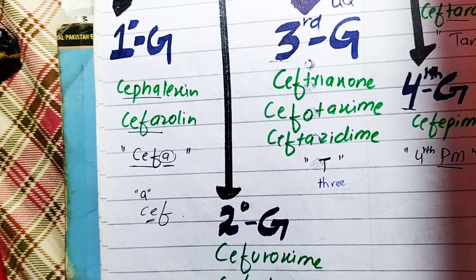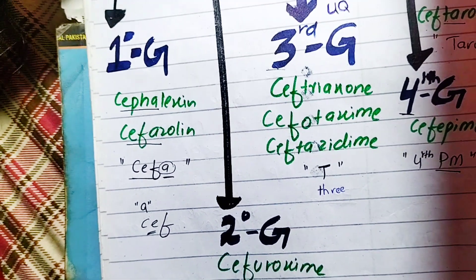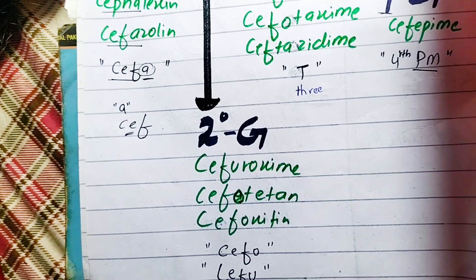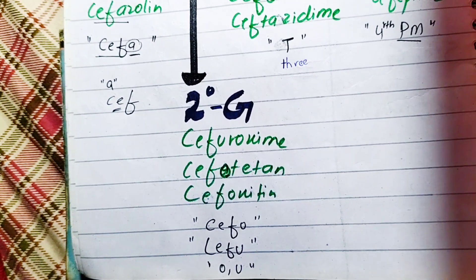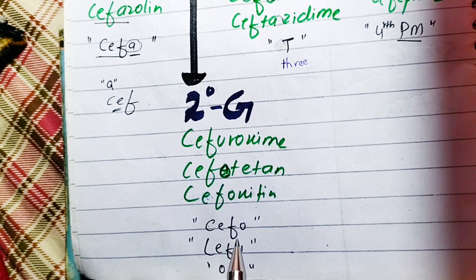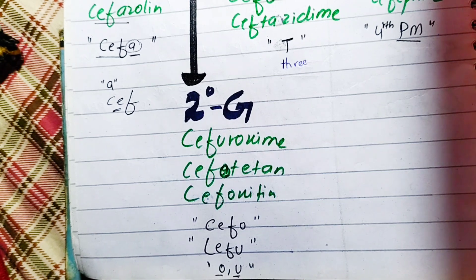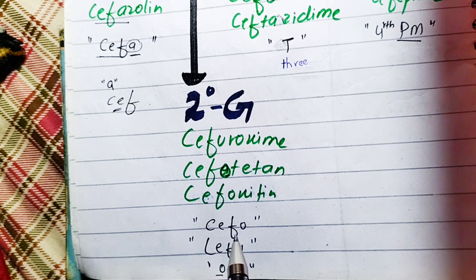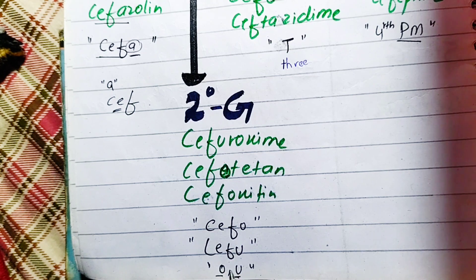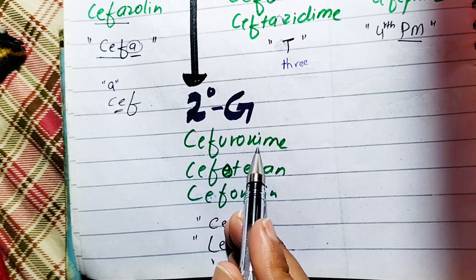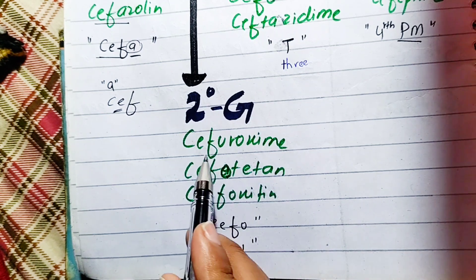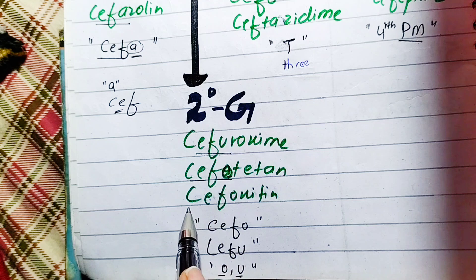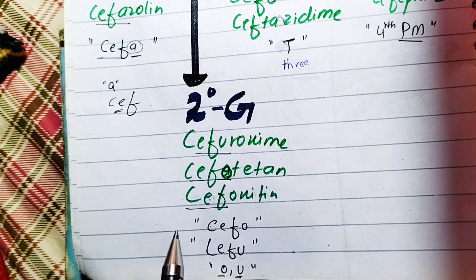Then we move on to the second generation. The drugs are very difficult for everyone. Remember to remember the CFO - CFO, O and U. CFO, Cefuroxime, Cefotetan, Cefoxitin. So we have to remember the CFO and CFU.